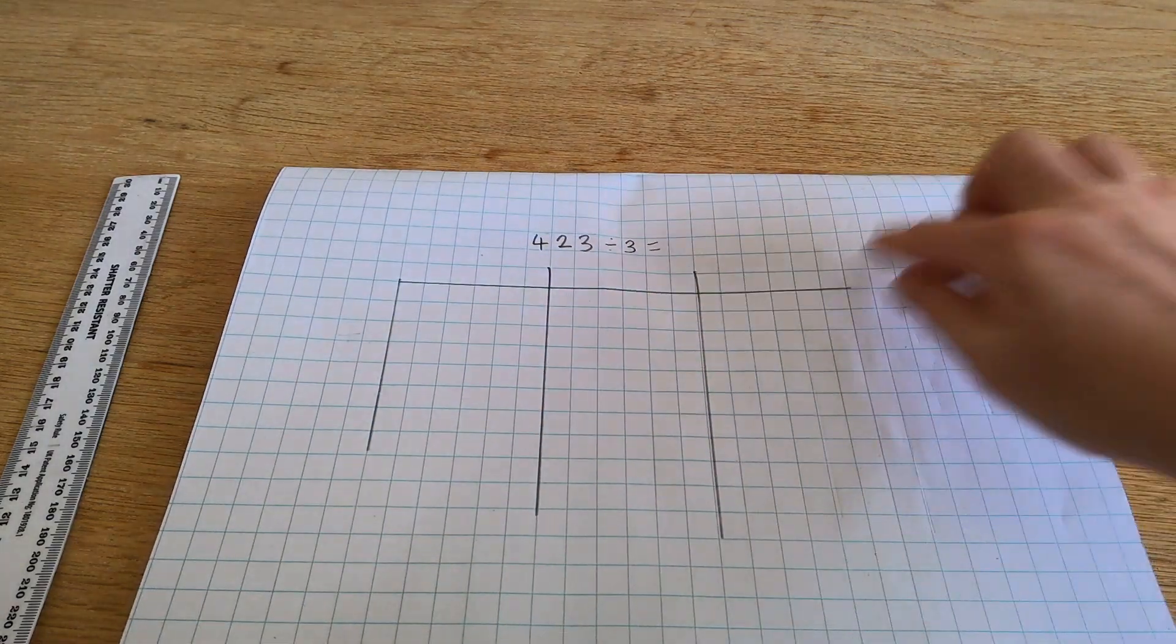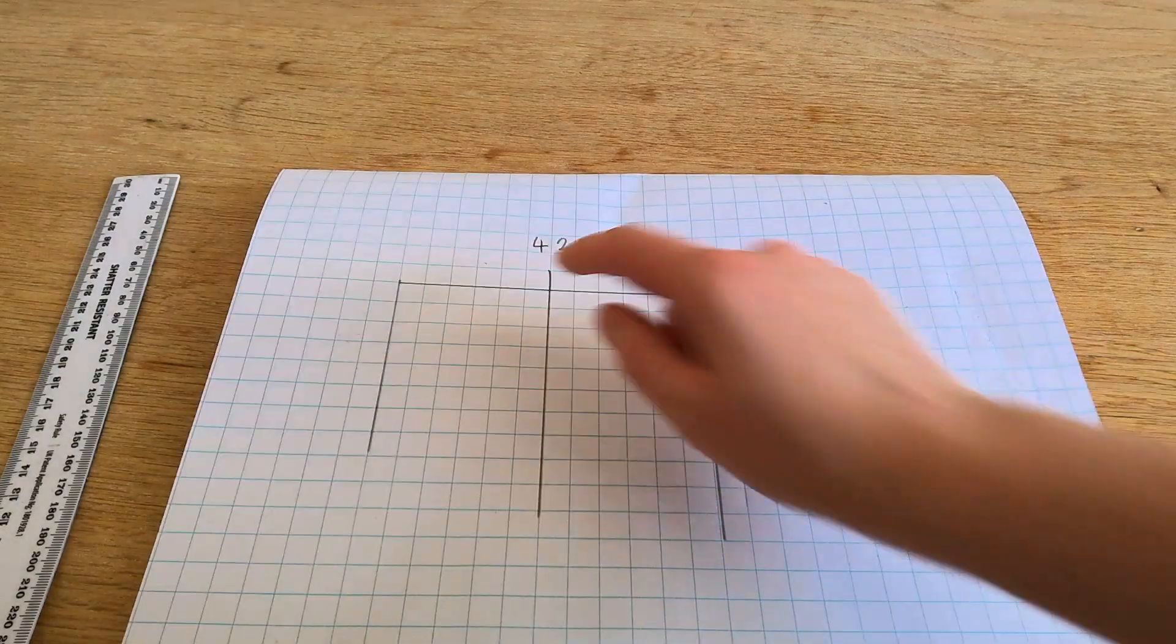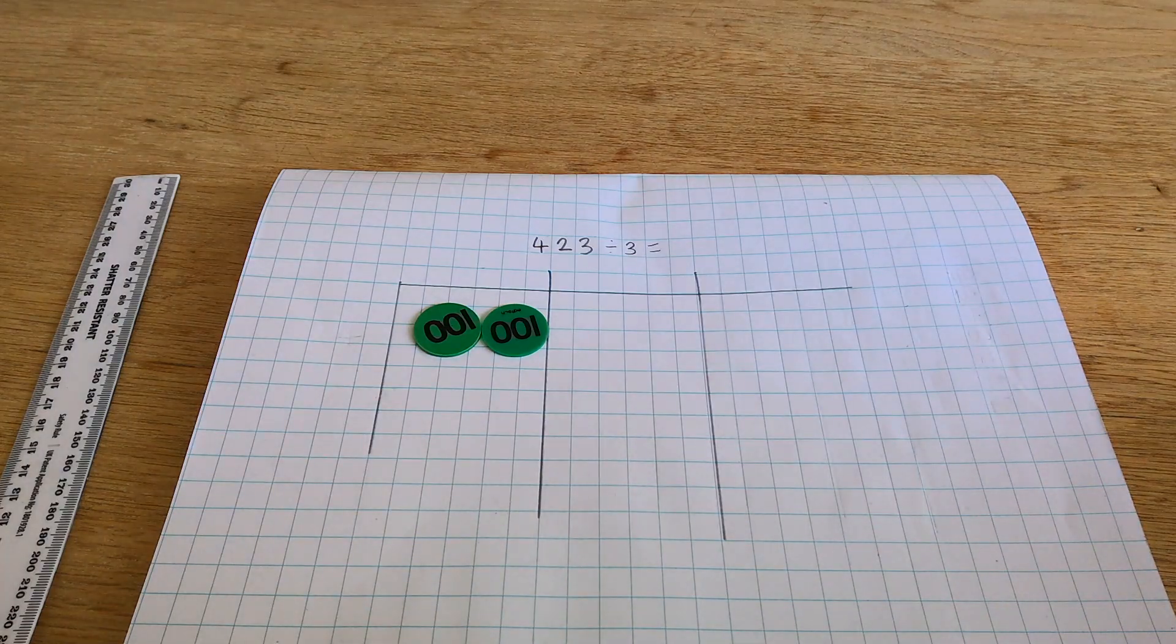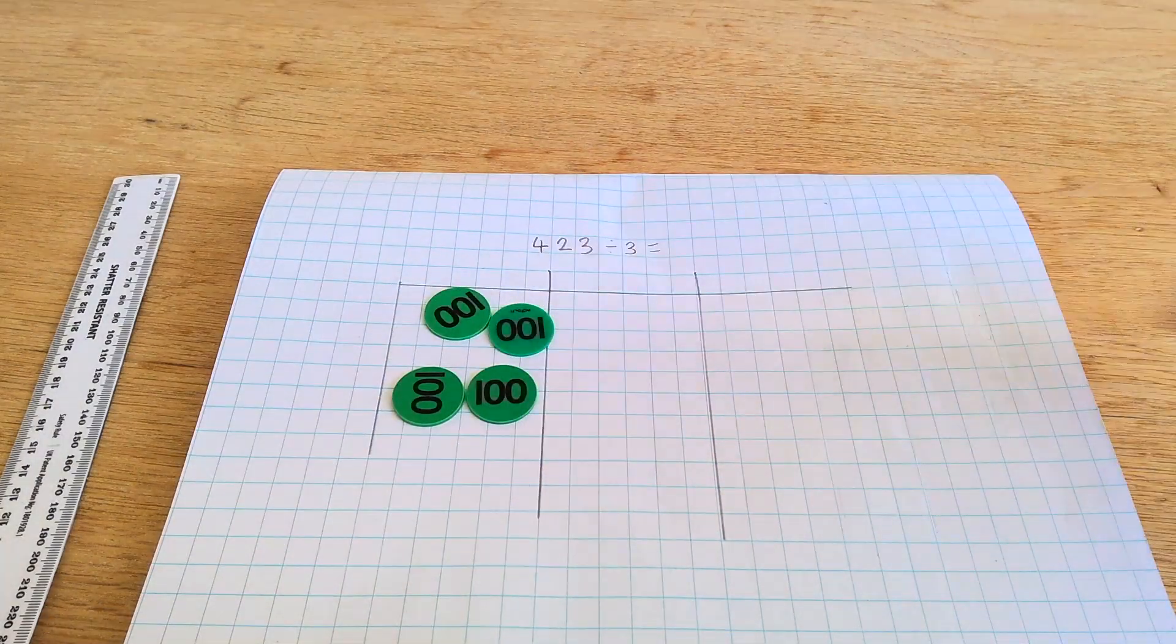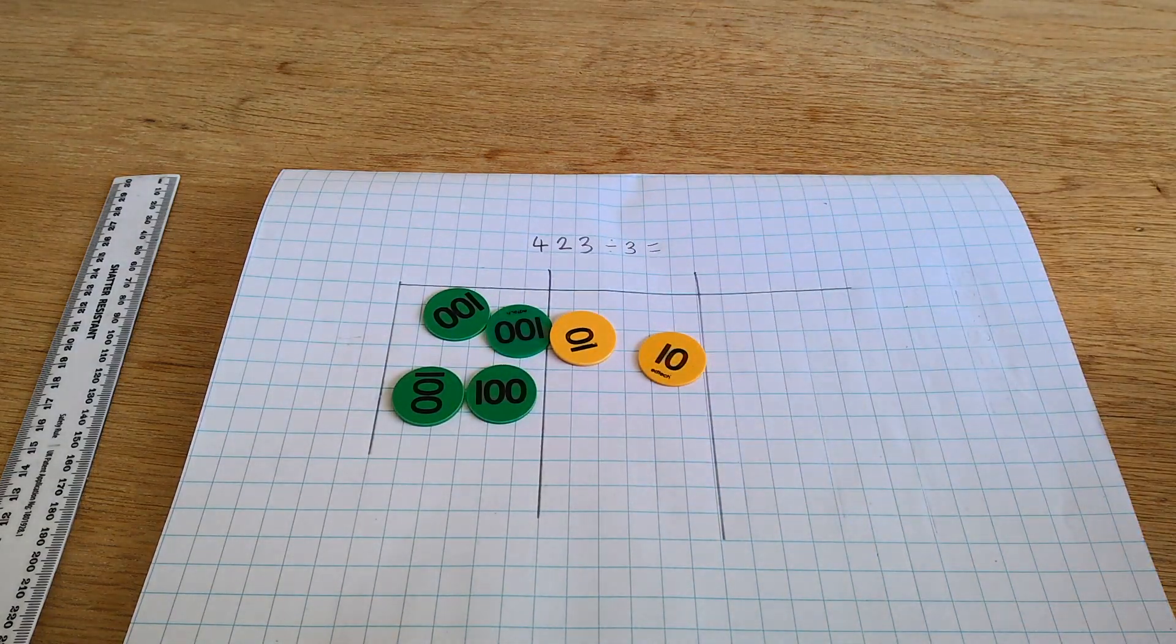I've got my place value grid and my division bracket here into hundreds, tens, and ones. I'm going to make out the dividend. I've got 4 hundreds, 2 tens, and 3 ones.